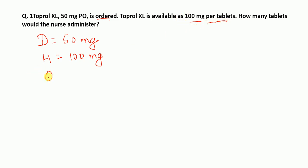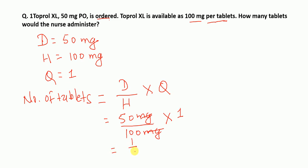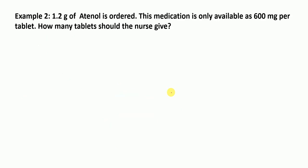Since 100 mg is available per tablet, quantity Q equals 1. The number of tablets equals amount desired divided by amount on hand times Q: 50 mg divided by 100 mg times 1. The mg units cancel, giving 50/100, which equals 0.5 tablets. Therefore the nurse is going to administer half a tablet to get the desired 50 mg dose.